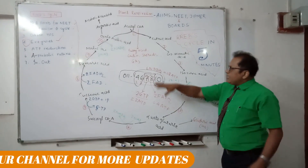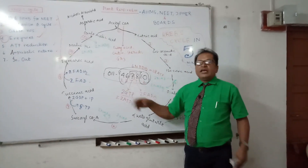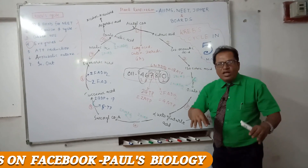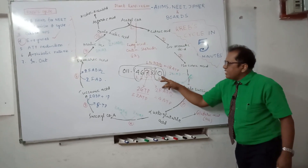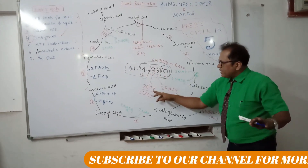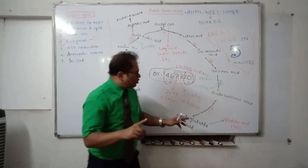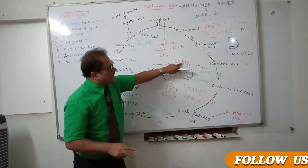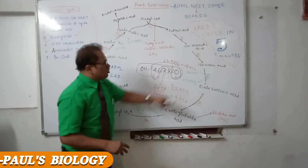Again: total ATP found in the Krebs cycle is 24. The phone number is 011-4678-10. At steps 4, 6, and 10, two NADH2 each form — that is 6 NADH2 = 18 ATP, since 1 NADH2 = 3 ATP. At step 7, 2 GTP = 2 ATP. At step 8, 2 FADH2 = 4 ATP, since 1 FADH2 = 2 ATP.